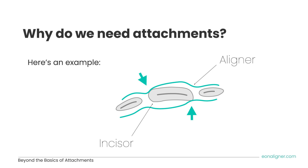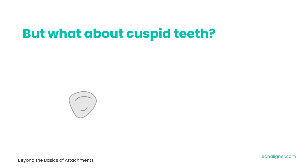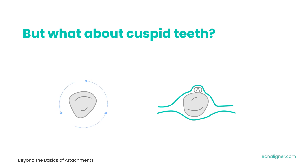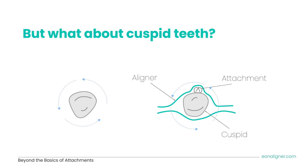Here is an example showing a transverse view of an incisor covered by the aligners. Its rectangular shape enables the aligner to push against its edges and rotate the tooth in the desired position, as shown in the diagram. Now imagine the same for a cone-shaped tooth — trying to rotate a canine with aligners alone. Its shape does not provide a flat surface for the aligner to exert its push force. Here is where attachments come in handy, using the flat surface of the attachment to push and rotate the canine.